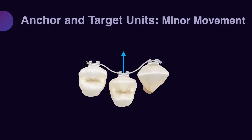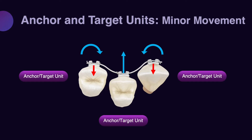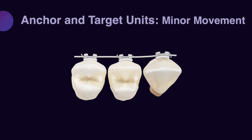Sometimes, especially when we are dealing with minor movement, we really do not define the target unit and anchor unit. Actually, at different time points during treatment, each individual tooth can act both as an anchor or target unit. In other words, the system is not very defined — we call it an undetermined system. Even though the system is not defined, it can produce relatively predictable results that are clinically very useful. So during minor movement, this definition is not necessary because both units can work as target and anchor unit.